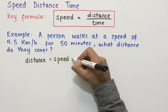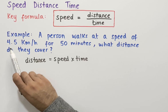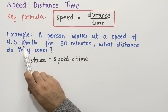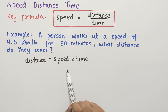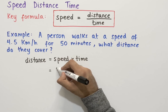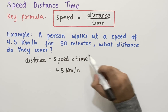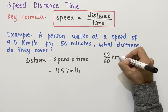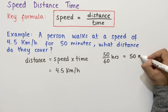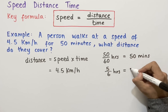In this question, the time is 50 minutes and the speed is 4.5 kilometers per hour. Since we have kilometers per hour, it's a good idea to convert the time into hours so the hours cancel neatly, leaving us with kilometers. To convert 50 minutes into hours, we divide by 60. So 50 over 60 hours equals 50 minutes, which simplifies to 5 over 6 hours.